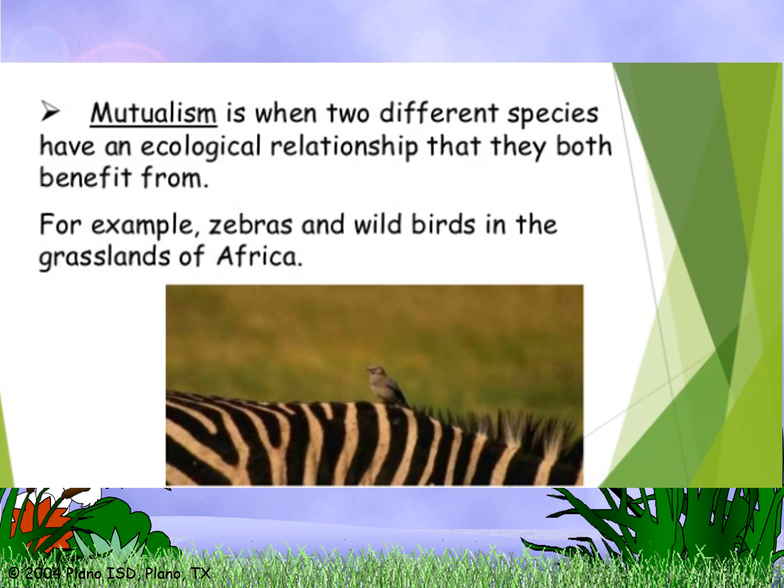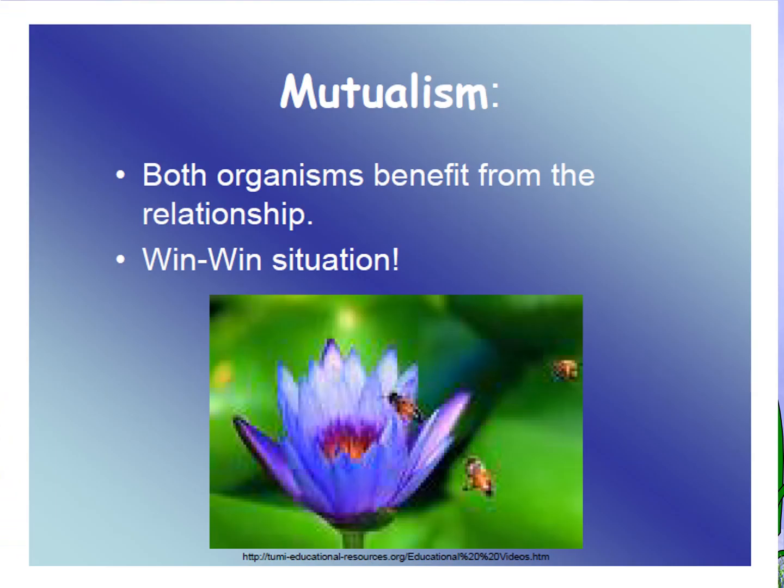An example of mutualism is zebras and wild birds in the grasslands of Africa. The birds eat ticks from the zebra, so the bird benefits, and the zebra benefits by having parasites removed — both organisms help each other. Another example of mutualism is flowers and bees.